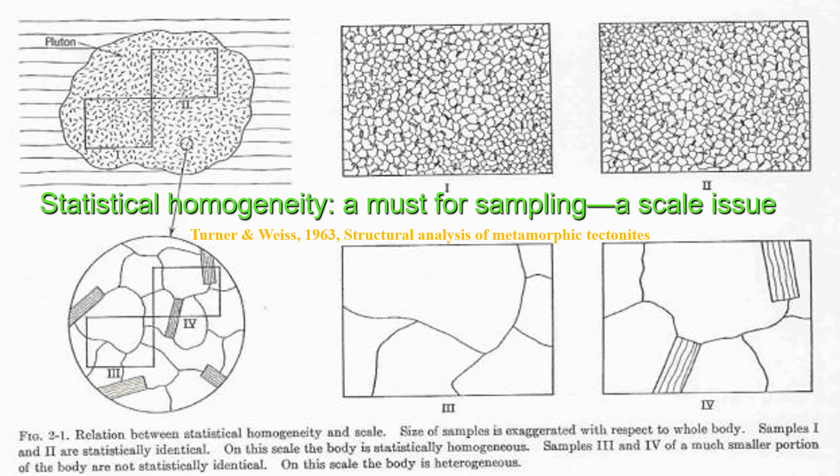At a much smaller scale — for example, a thin section scale — two portions of that thin section are not the same, because one type of mineral, the micas, are not present in both slices. As we see in the top row of figures, areas one and two within a pluton are not the same in detail, but statistically they are the same.